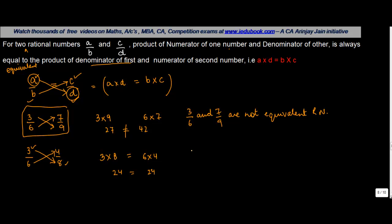Which means that 3 upon 6 and 4 upon 8 are equivalent rational numbers.